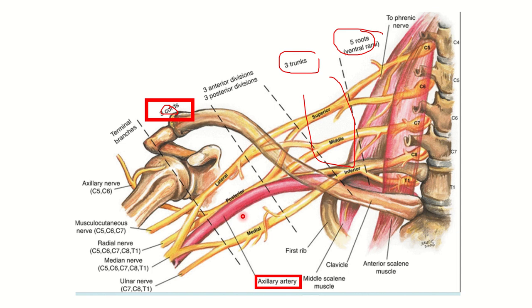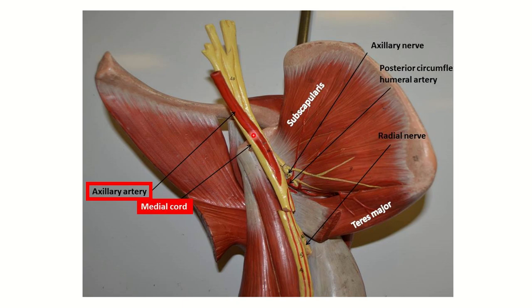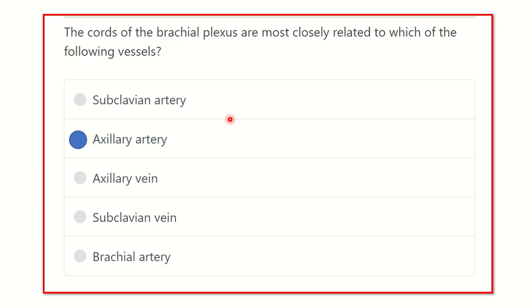The name of this artery is the axillary artery. The axillary artery is located within the cord region, and the brachial plexus cords encircle it. We can see the medial cord, lateral cord, and posterior cord — all surrounding the axillary artery. So the answer is that the cords of the brachial plexus lie around the axillary artery. Thank you.